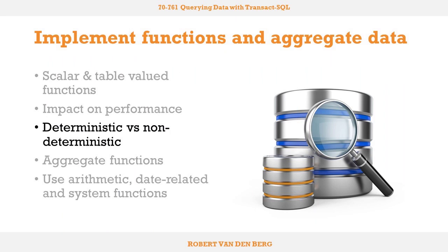So to recap: a deterministic function always returns the same result, given the same input parameters and the same state of the database, while a non-deterministic function does not necessarily produce the same result, even when called with the same input parameters and the same state of the database.